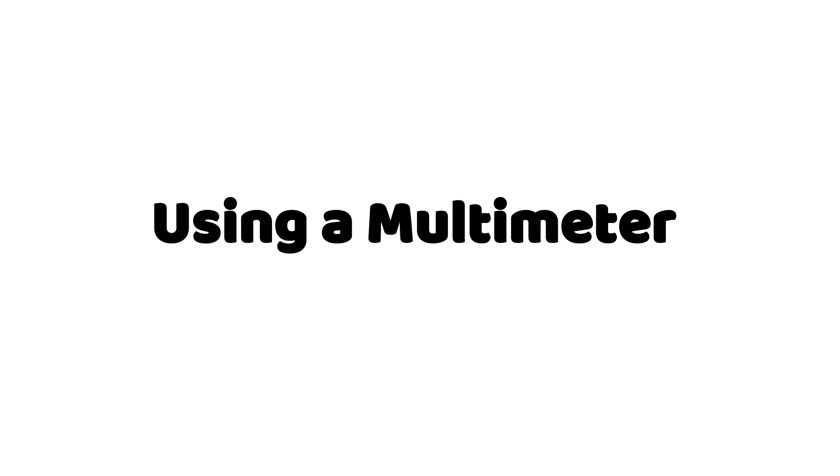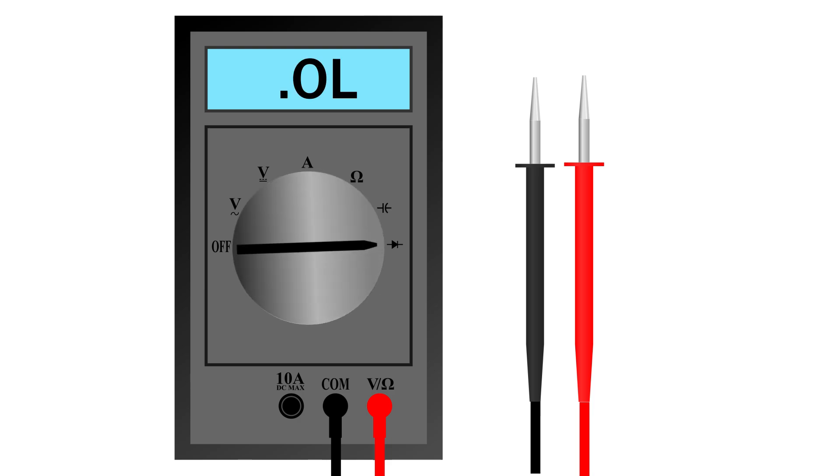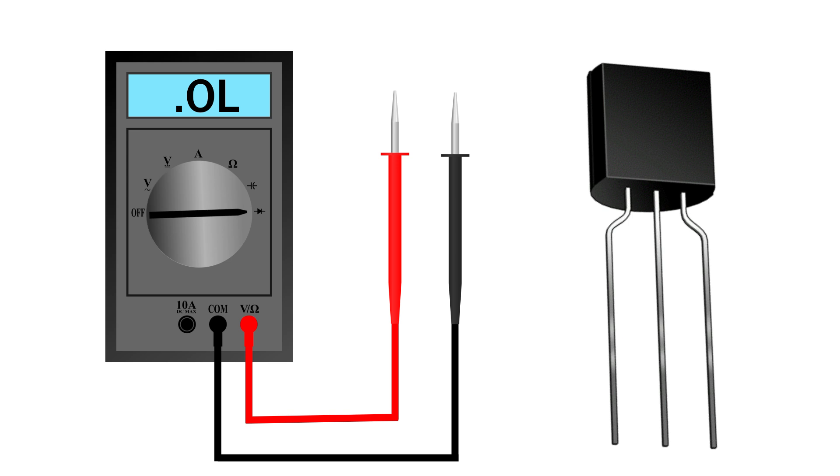Using a multimeter. Set your multimeter to diode mode. Hold transistor flat side towards you, pins down.